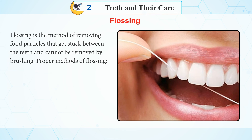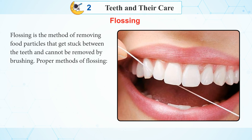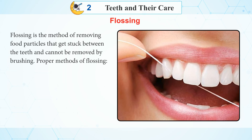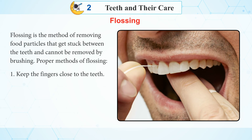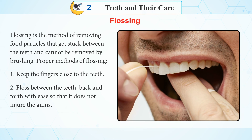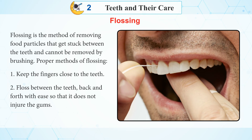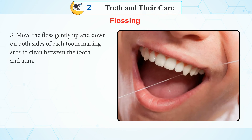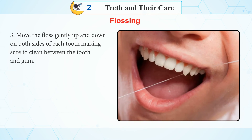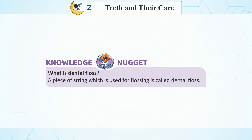Flossing is a method of removing food particles that get stuck between the teeth and cannot be removed by brushing. Proper method of flossing: Number one, keep the fingers close to the teeth. Number two, floss between the teeth back and forth gently so that it does not injure the gums. Number three, move the floss gently up and down on both sides of each tooth, making sure to clean between the tooth and gum. A piece of string used for flossing is called dental floss.